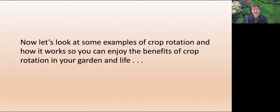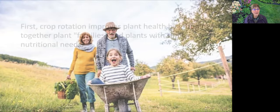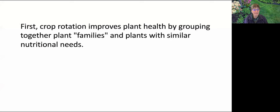Now let's look at some examples of how crop rotation works so you can enjoy its benefits in your garden and in your life. First, crop rotation improves plant health by grouping together plant families and plants with similar nutritional needs. The groups are then rotated based on the availability of soil nutrients they need. Let's do an example.